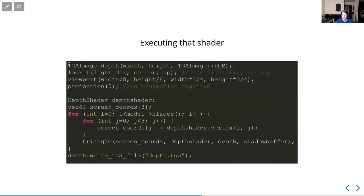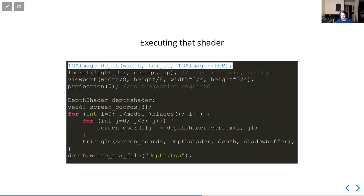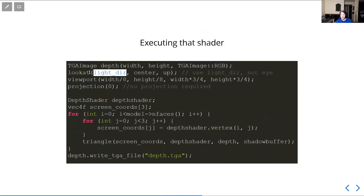The things to know is we don't set up the camera for the scene the same way. You have an image to write into, but that's just for debugging. For the look-at matrix or the view matrix, we simply put the direction of the light in. Now, there is a downside here because the light direction is a direction.